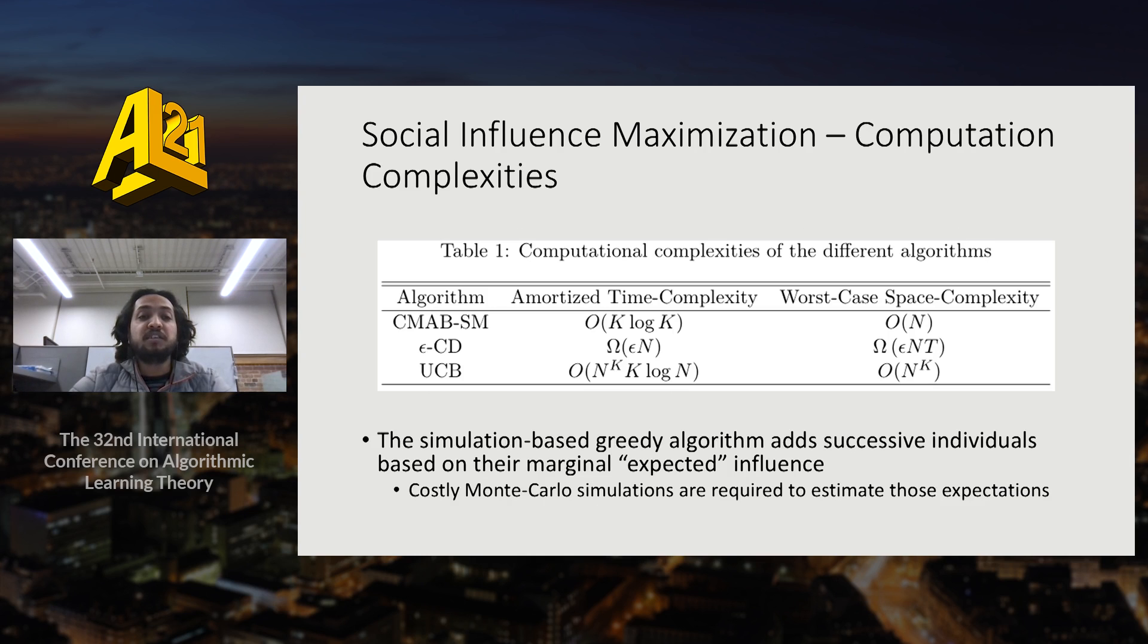We now compare the computation complexities of all the algorithms. Time complexity at any time is K log K for the CMAB-SM algorithm and the worst case complexity is order N to store the total influence of each of the N possible seed sets. The epsilon-greedy distribution algorithm has a worst case space complexity of epsilon-NT which comes from the total propagation trace for first epsilon-t times. Further, the simulation-based greedy algorithm adds successful individuals based on their marginal expected influence and it obtains those expected influences using Monte Carlo simulations which is a very costly step.